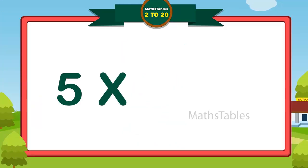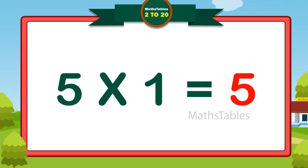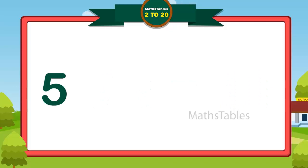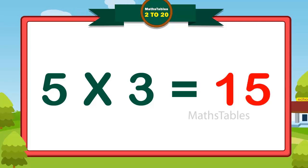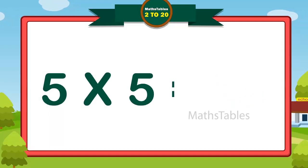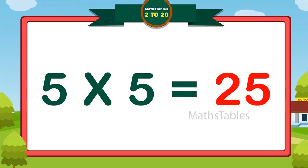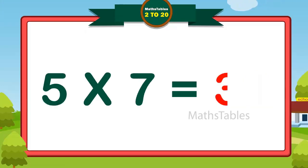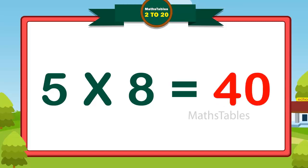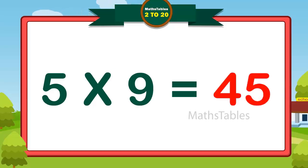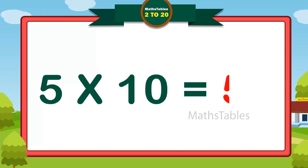Five ones are five. Five twos are ten. Five threes are fifteen. Five fours are twenty. Five fives are twenty-five. Five sixes are thirty. Five sevens are thirty-five. Five eights are forty. Five nines are forty-five. Five tens are fifty.